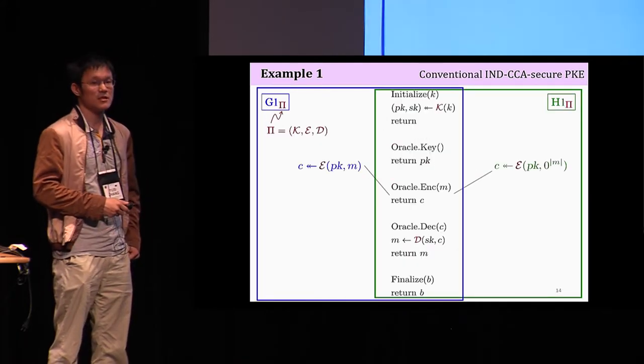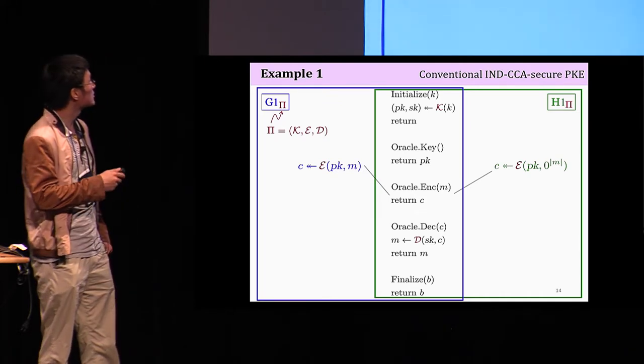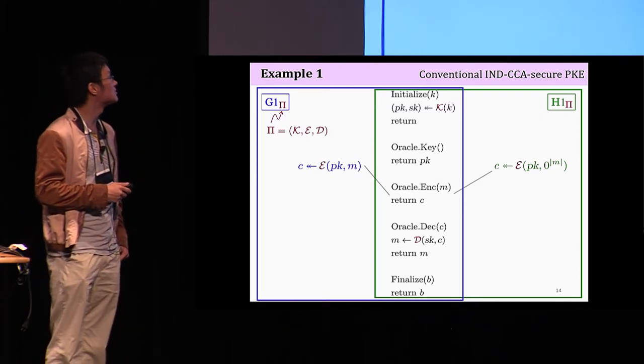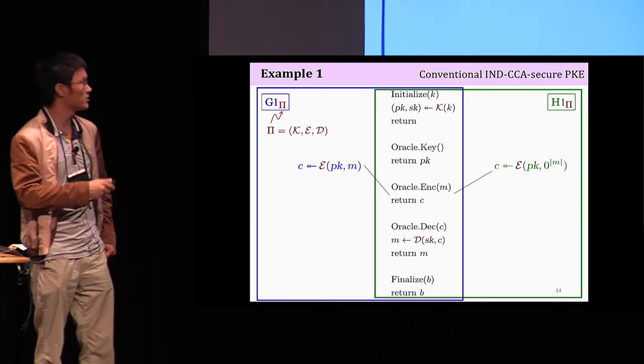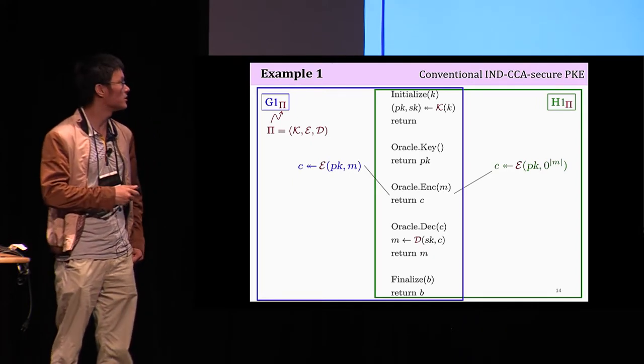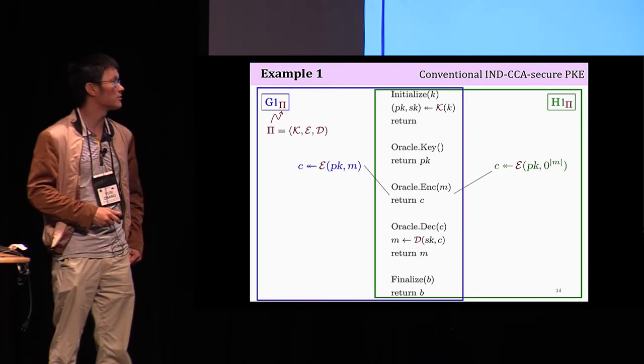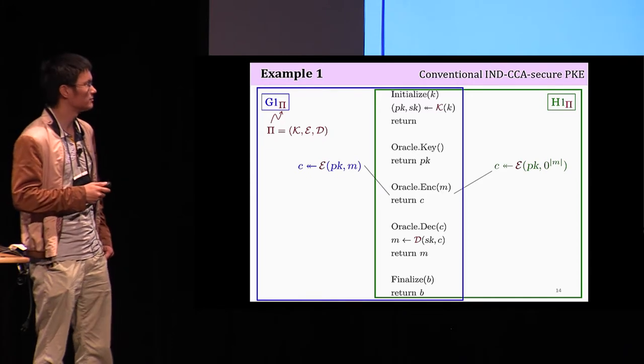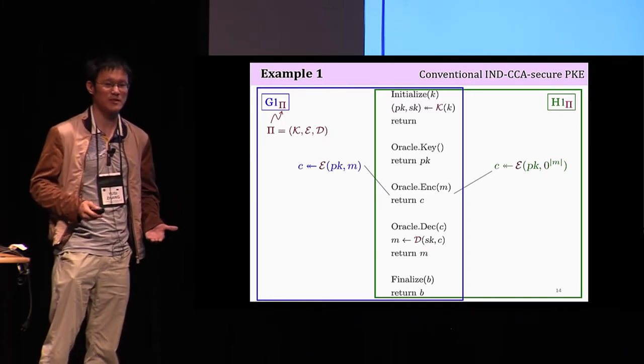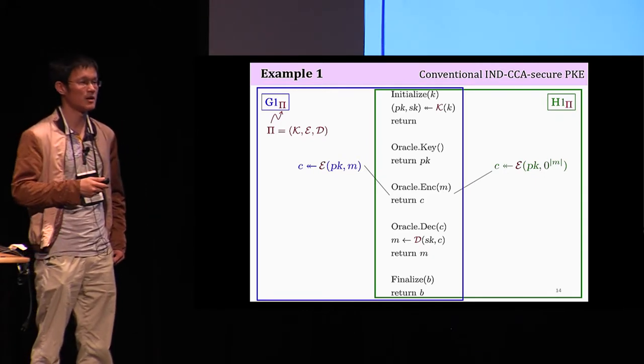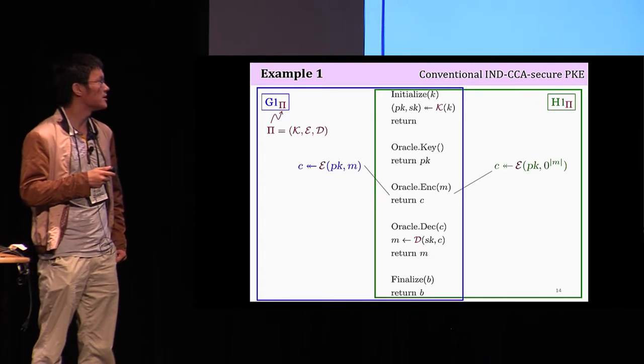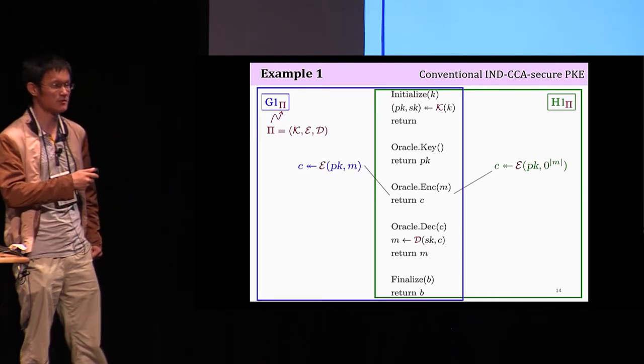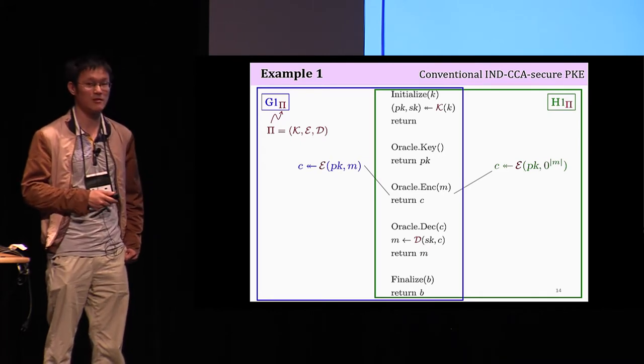So, let's try to design security games for IND-CCA security. This is the first attempt. Both the real side G1 and the ideal side H1 share initialized key decryption finalized procedures that have natural semantics. Except for the encryption oracle where in the real side, you encrypt the real message, but in the ideal side, you encrypt an all zero-bit message. If we are going to give conventional indistinguishability-based definitions, we know that this is not enough. There are ways to trivially win this game. Adversary simply asks encryption M gets back C, then he decrypts C.